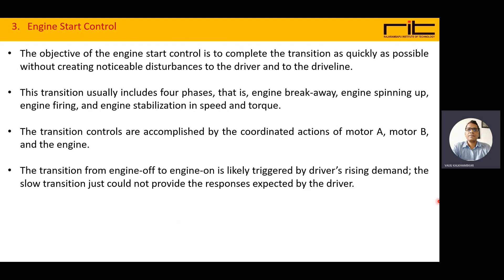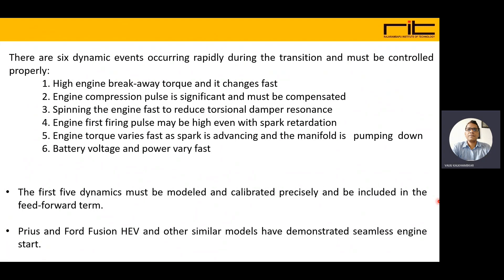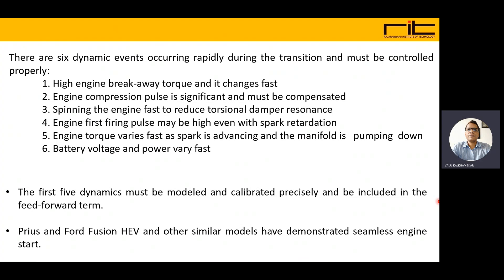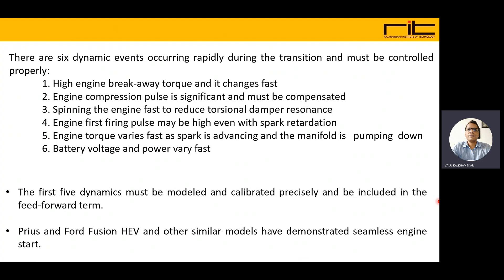There are six dynamic events occurring rapidly during the transition that must be controlled. First, high engine breakaway torque that changes fast. Second, engine compression pulse is significant and must be compensated. Third, spinning the engine fast to reduce the torsional damper response. Fourth, engine fast firing pulse may be high even with spark retardation. Fifth, engine torque varies fast as spark is advancing and the manifold is pumping down. Sixth, battery voltage and power vary fast. The first five dynamics must be modeled and calibrated precisely and included in the feed-forward term. Prius, Ford Fusion hybrid, and other similar models have demonstrated seamless engine start.